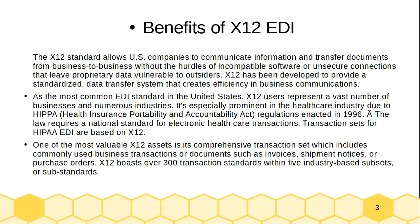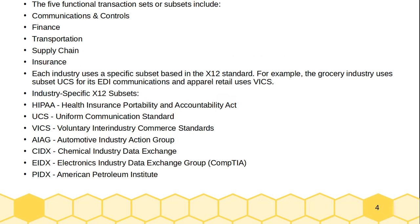The five functional transaction set subsets include: first, communication and control; second, finance; third, transportation; fourth, supply chain; and fifth, insurance. Each industry uses a specific subset based on the X12 standard.